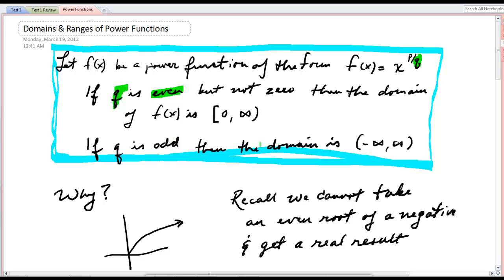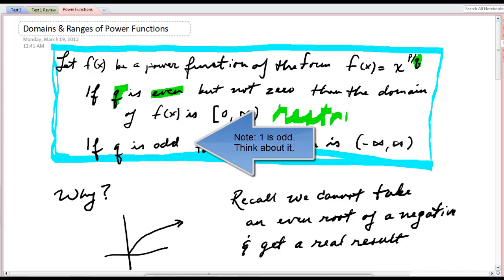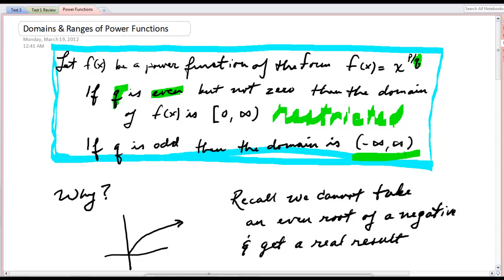If q is odd, the domain is negative infinity to infinity. It's unrestricted. So up here, this is restricted, but this one is not restricted.